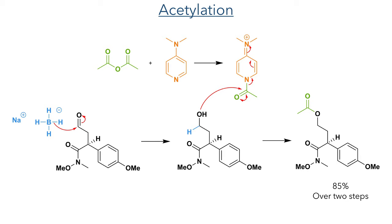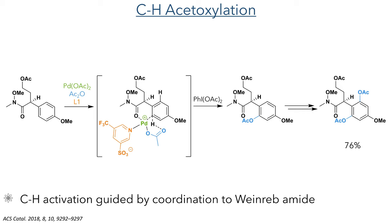The next step of the synthesis involved another C–H activation reaction, in this case a palladium-promoted acetoxylation reaction. The Weinreb amide acts as a directing group, which coordinates to the palladium together with a pyridine-based ligand and an acetate group. This acetate group assists in the C–H activation by interacting with the proton, allowing for it to be abstracted, and the acetate group can then bond to the carbon to take its place. This carbon–oxygen bond formation is further promoted by diacetoxyiodobenzene. Overall, two acetate groups were installed in the molecule in both positions ortho to the group containing the Weinreb amide.